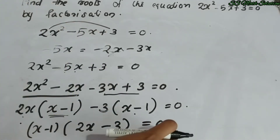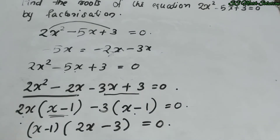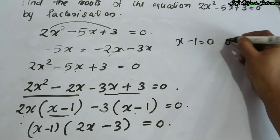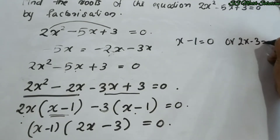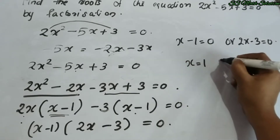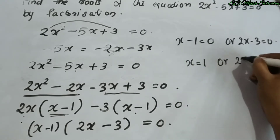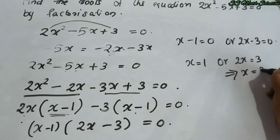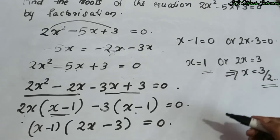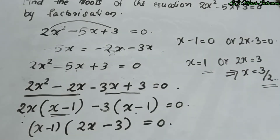We now have two factors equal to zero: x − 1 = 0 or 2x − 3 = 0. From x − 1 = 0, we get x = 1. From 2x − 3 = 0, we get 2x = 3, so x = 3/2. Therefore the two roots are x = 1 and x = 3/2.